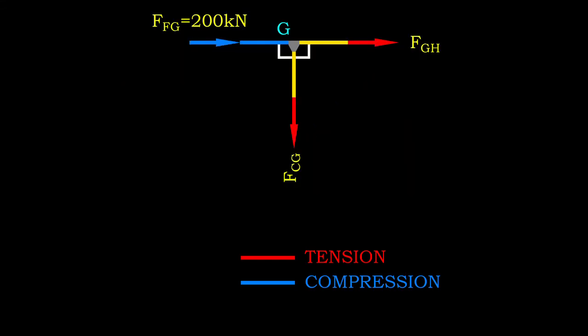Then, we proceed with joint G. Member GH is in 200 kN of compression, while member CG is a zero force member.